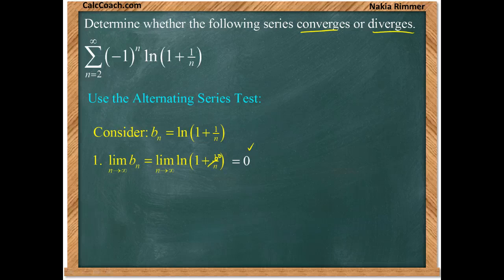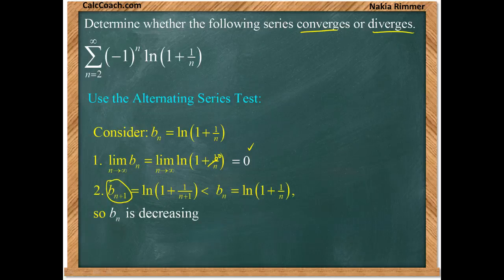So half the story is true. The other half is that we need the sequence to be decreasing. We need the b sub n plus 1, the next term, to be smaller than the current term, b sub n.